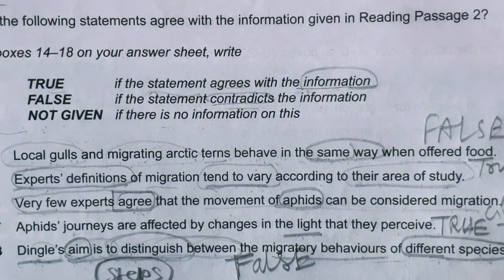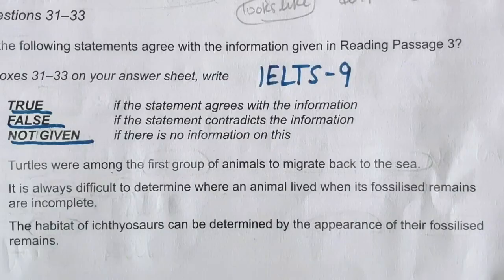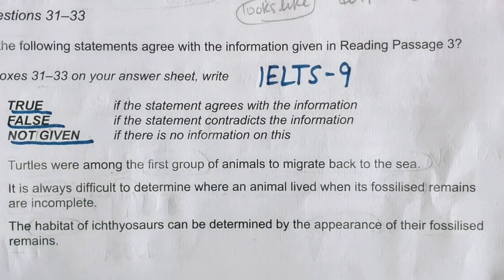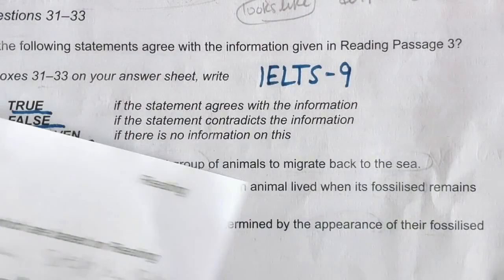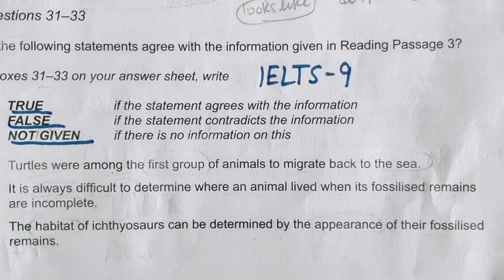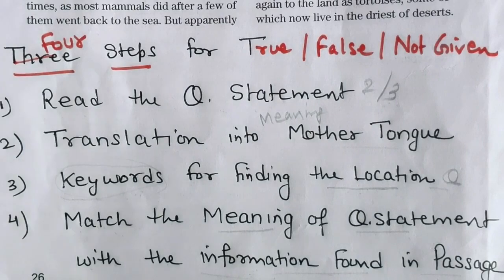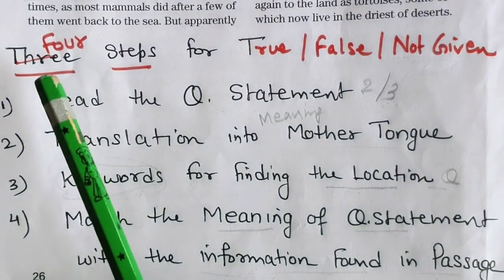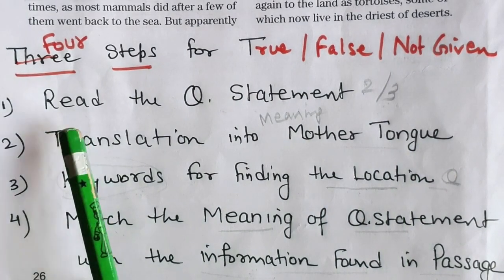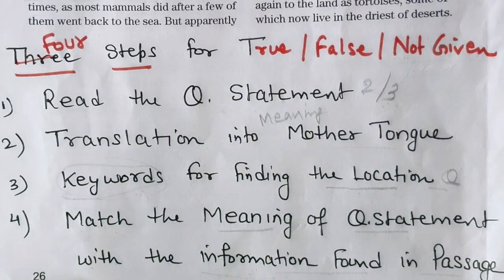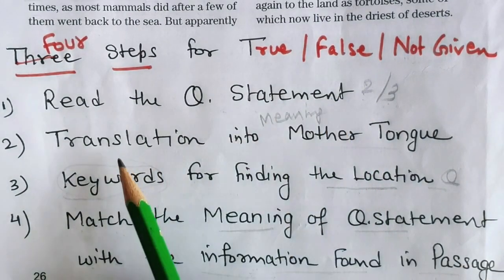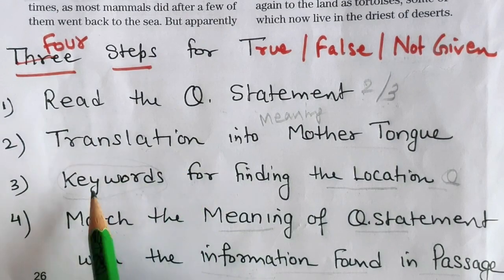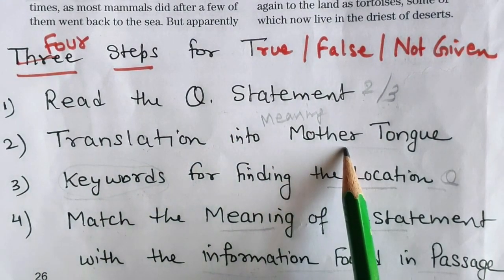That answer is absolutely FALSE. Now let's do one more exercise of True, False, Not Given — selected from the reading passage 'The History of Tortoise,' an academic reading passage. But before starting, let's revise the four steps: first, always read the question statement twice or thrice to understand its meaning. Second, translate into your mother tongue.